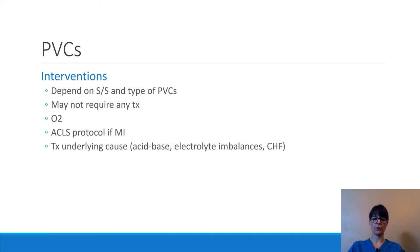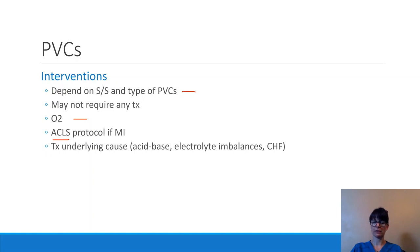Interventions for PVCs — sometimes none are required. Treatment depends on signs and symptoms and the type of PVCs: multifocal, coupled, or runs of PVCs are more dangerous than a single isolated PVC. Oxygen can be very helpful in resolving PVCs if there is some oxygen deprivation in the heart. If the patient is having a myocardial infarction, follow advanced cardiac life support protocol. If there is an underlying cause — electrolyte imbalance, acid-base imbalance, or fluid volume excess from congestive heart failure — that must be investigated and treated.